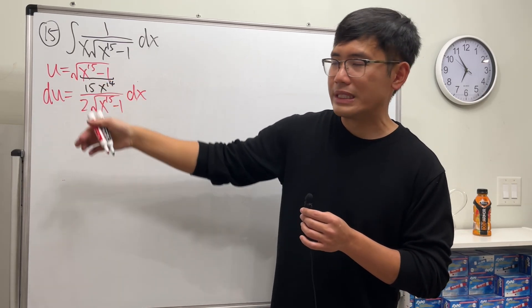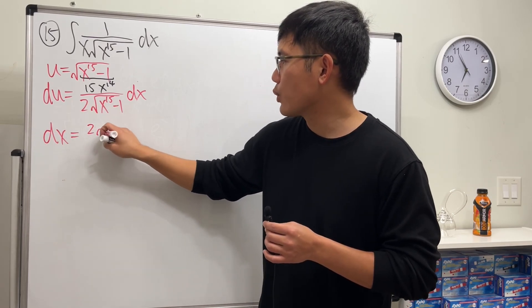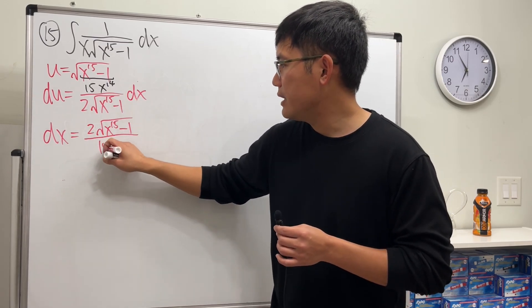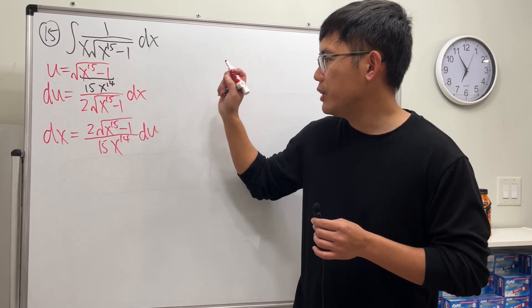And then multiply the reciprocal on both sides. dx equals we have 2 square root of x to the 15 minus 1 over 15x to the 14th, and then we have the du here.